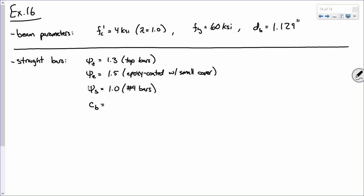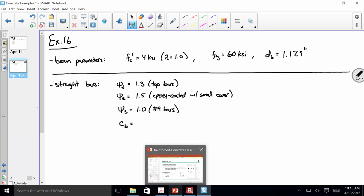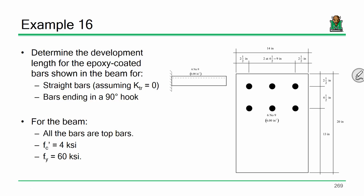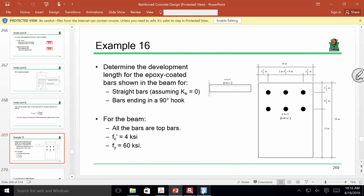Epoxy coated bars with a cover less than 3 bar diameters or a clear spacing less than 6 bar diameters. Is that going to be the case for our problem? What's the bar diameter, like 1.12 inches? What's the bar spacing? The bar spacing's like 4.5 inches. The cover's 2.5 inches. So what's our size going to be? It's going to be 1.5, epoxy coated with small cover.